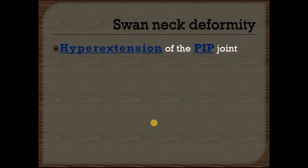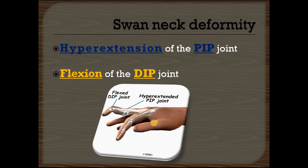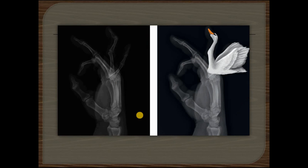The opposite of boutonniere deformity is the swan neck deformity. In this deformity there is hyperextension of the PIP joint and flexion of the distal interphalangeal joint. You can see in this picture very clearly — hyperextension of the PIP joint and flexion of the DIP joint. In the x-ray you can easily see why it is called the swan neck deformity. If you remember one deformity, the other will be remembered easily.